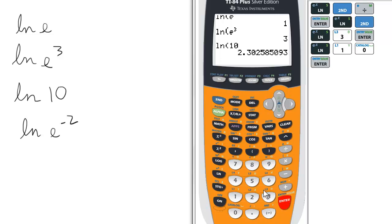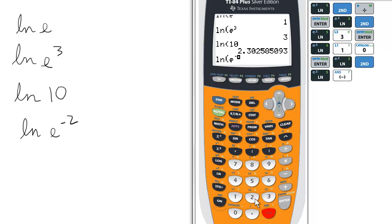And then let's take the natural log of e to the negative 2. So we press ln, and then we press second and the ln key for e to a power, in this case negative 2, enter. So the ln of e to the negative 2 is negative 2.